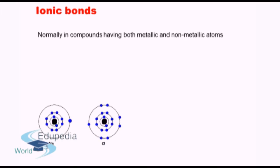Let's start with the ionic bond. Ionic bonds are the type of bond which normally exist in a compound having one metallic atom and another non-metallic atom. Put differently, the two atoms participating in an ionic bond generally have a large difference in electronegativity, and this difference in electronegativity gives rise to the ionic bond.